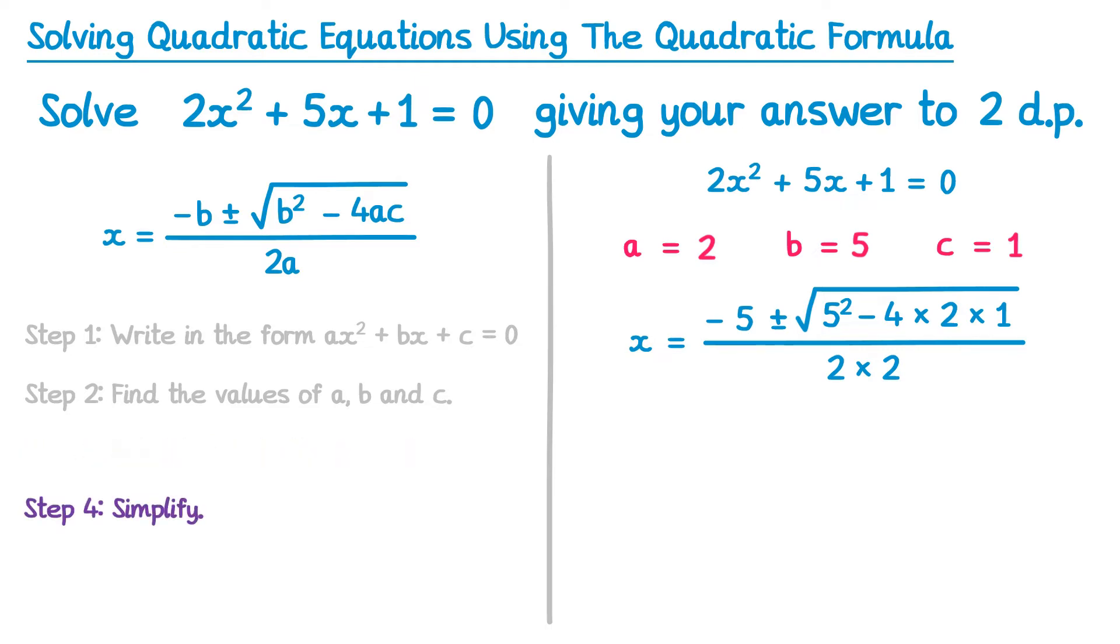The next step is to simplify. We're going to tidy up a little bit. We're going to keep x equals negative 5, plus or minus the square root, but we're going to simplify what's inside the square root. So if you do 5 squared, you get 25, and then negative 4 times 2 times 1 is negative 8, and 25 take 8 is 17. You'll often have this question on a calculator paper though, so you could probably just type that into your calculator. And on the bottom we have 2 times 2, which is 4.